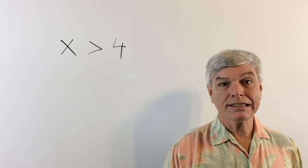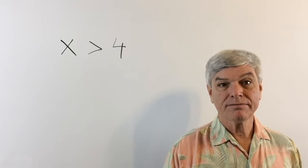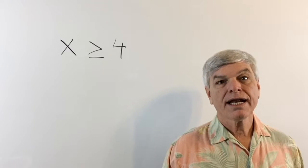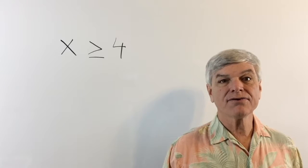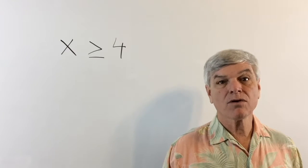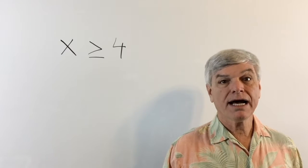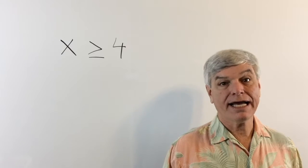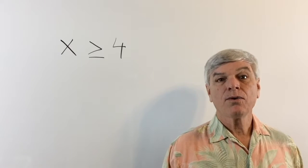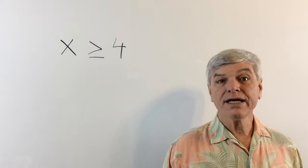Here's a hint: watch these arrows — they're always pointing toward the smaller number. How do we read this? x is greater than or equal to 4. It's the same as the other symbol except that the answer can be 4. It can be 4, 4.001, 5, 6, 7, 8. But it can't be less than 4 — it cannot be 3.99999. Remember, that arrow is pointing toward the smaller number, so x is greater than or equal to 4.